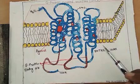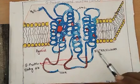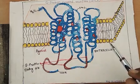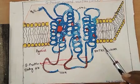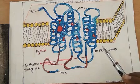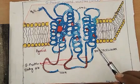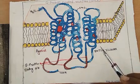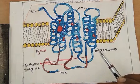Receptor activation leads to the displacement of GDP by GTP. The active alpha subunit carrying GTP dissociates from the other two subunits and either activates or inhibits the cellular response.